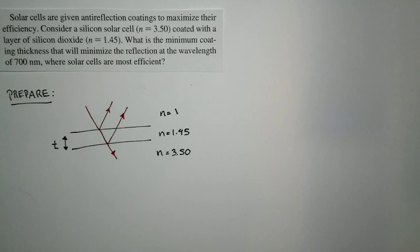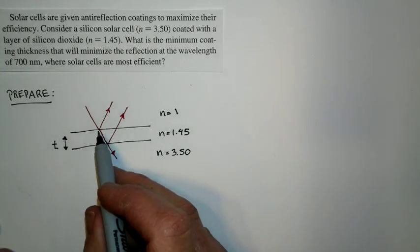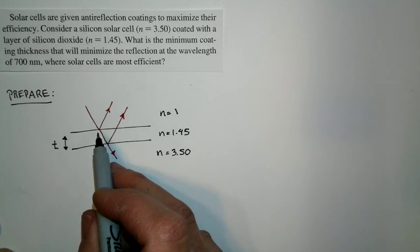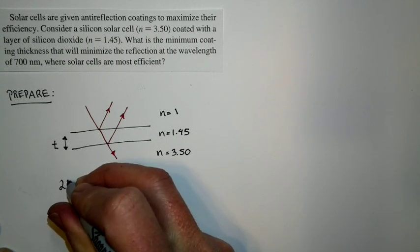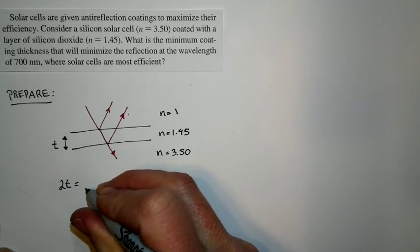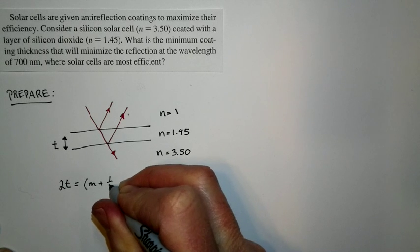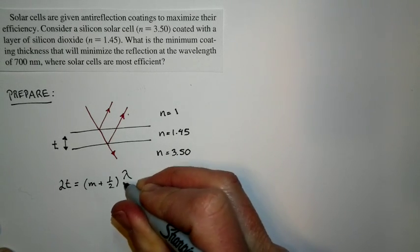And so we need to use the condition for destructive interference in the condition where I have two reflective phase changes. Phase change here, phase change here. And that condition is this. Two times the thickness of the layer is equal to m plus 1 half times lambda over n.